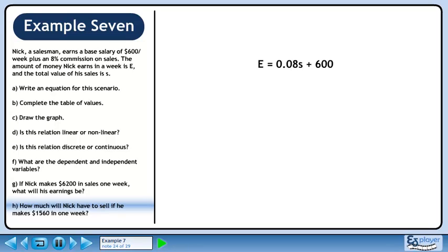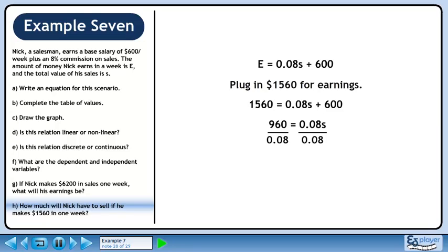Moving on to Part H, how much will Nick have to sell if he makes $1,560 in one week? Plug in $1,560 for earnings. This gives us $1,560 equals 0.08s plus $600. Subtract $600 from both sides of the equation. Divide each side by 0.08. The amount of sales required is $12,000.